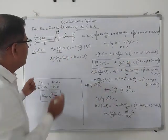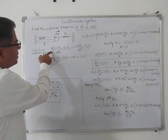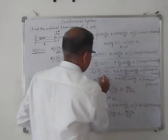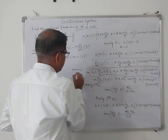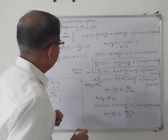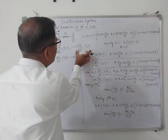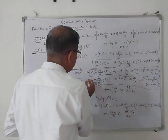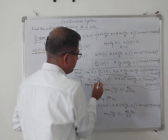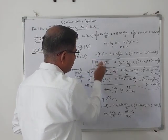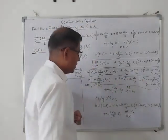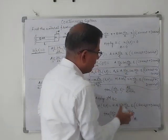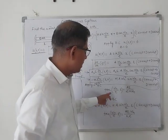To find the tensile force, we multiply del u by del x at x equal to L with the cross-sectional area A and Young's modulus E. This gives us the tensile force expression. The inertia force is obtained by differentiating the displacement expression with respect to t two times. According to the second boundary condition, the tensile force is equal to the inertia force, so we equate them.